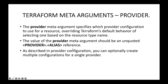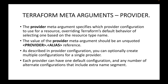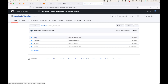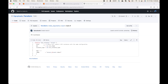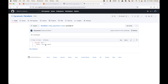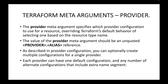As described in the provider configuration, you can optionally create multiple configurations for a single provider. That means you can define multiple provider blocks depending on your use case. Each provider can have one default configuration and any number of alternate configurations that include extra name segments. Terraform also accepts multiple provider blocks — one will be considered as the default, and the rest can be considered as alternate configurations for resource creation.